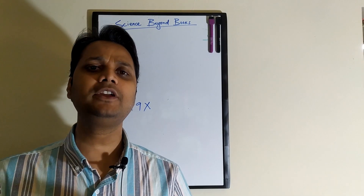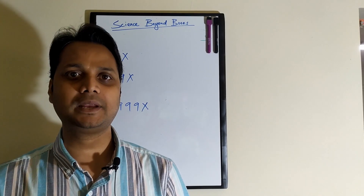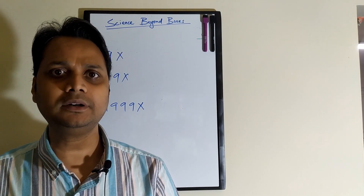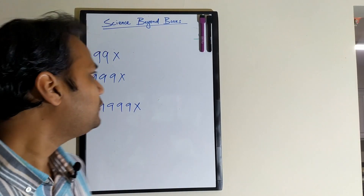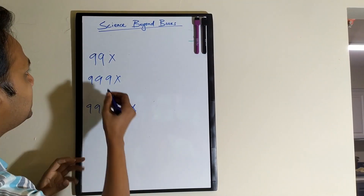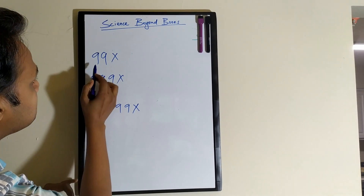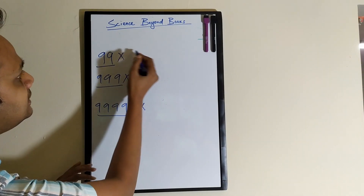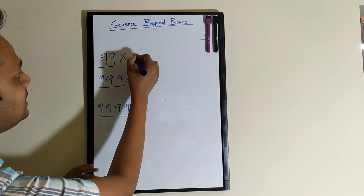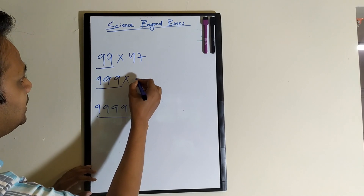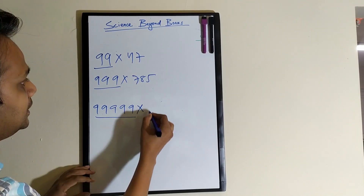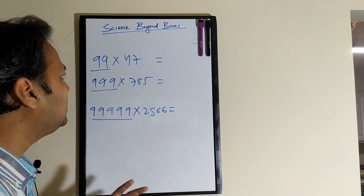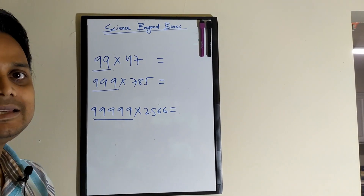Hi guys, how are you today? We are going to learn how we can multiply any 3, 4, 5, 6 digit number with another number in maybe less than one minute. So if you want to multiply two numbers, one of them should have just nines - like 99, 999, 9999 - and the other number could be any random number, say for example 47, or 785256, something like that. If you want to multiply these big numbers, you can do it in very easy steps.